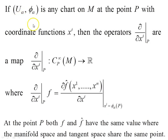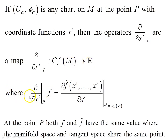Now, if (U_alpha, phi_alpha) is any chart on M at the point p with coordinate functions x_i, then the operators d/dx_i evaluated at the point p are a map from the class of smooth functions on the manifold at the point p to the reals. When these operators act on some arbitrary scalar function f, we have the relationship: d/dx_i of f at the point p equals d(f-hat)/dx_i evaluated at the point x_i equals phi_alpha of p.